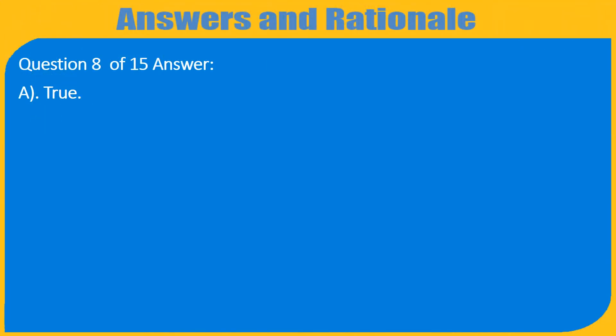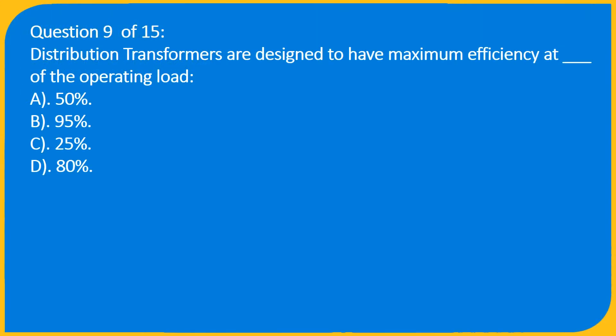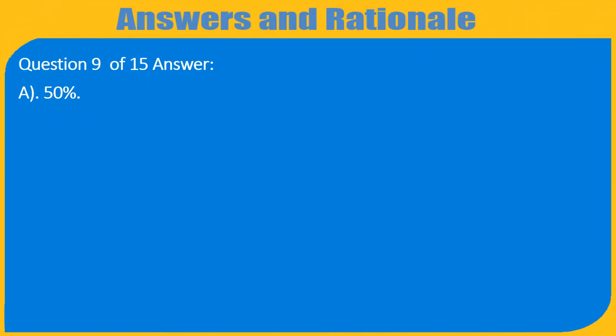Question 9 of 15: Distribution transformers are designed to have maximum efficiency at ___ of the operating load. A. 50%. B. 95%. C. 25%. D. 80%. Answer: A. 50%.